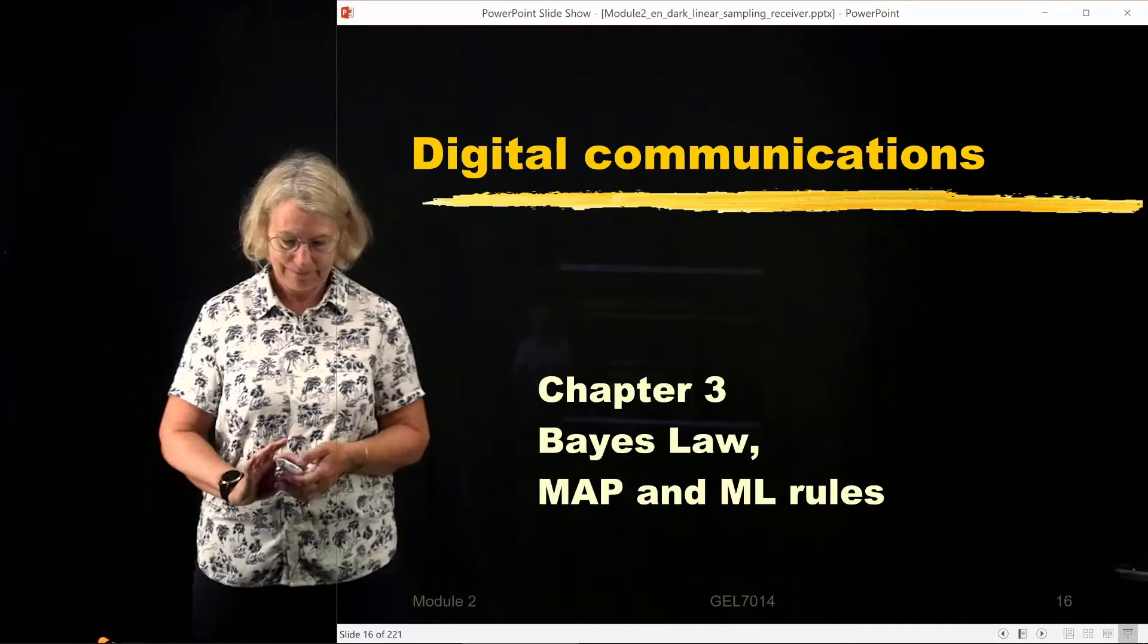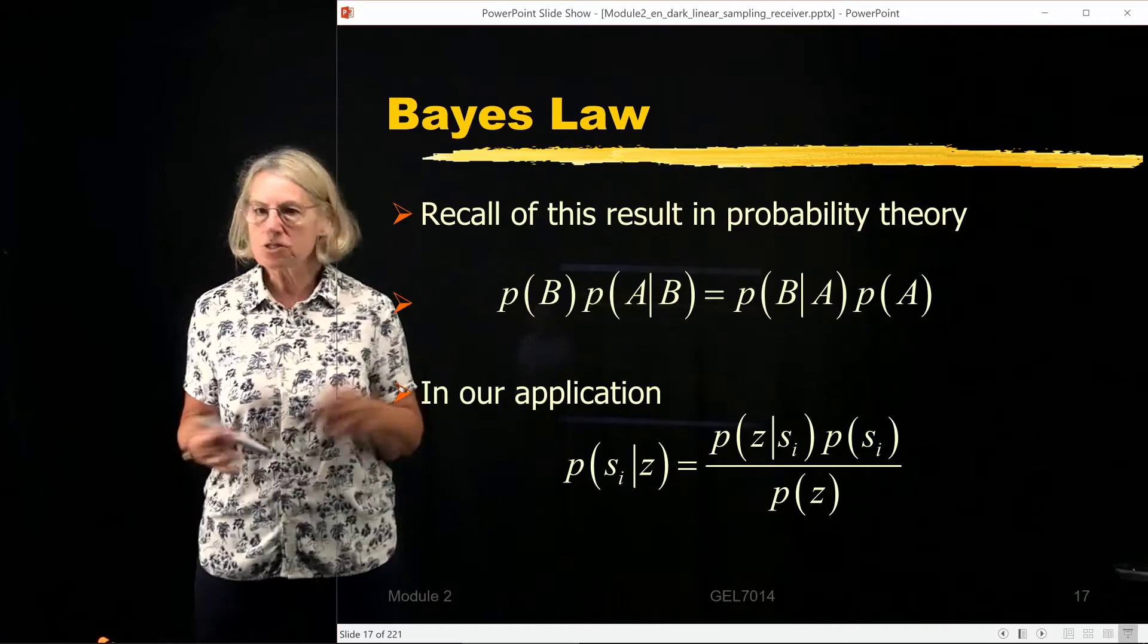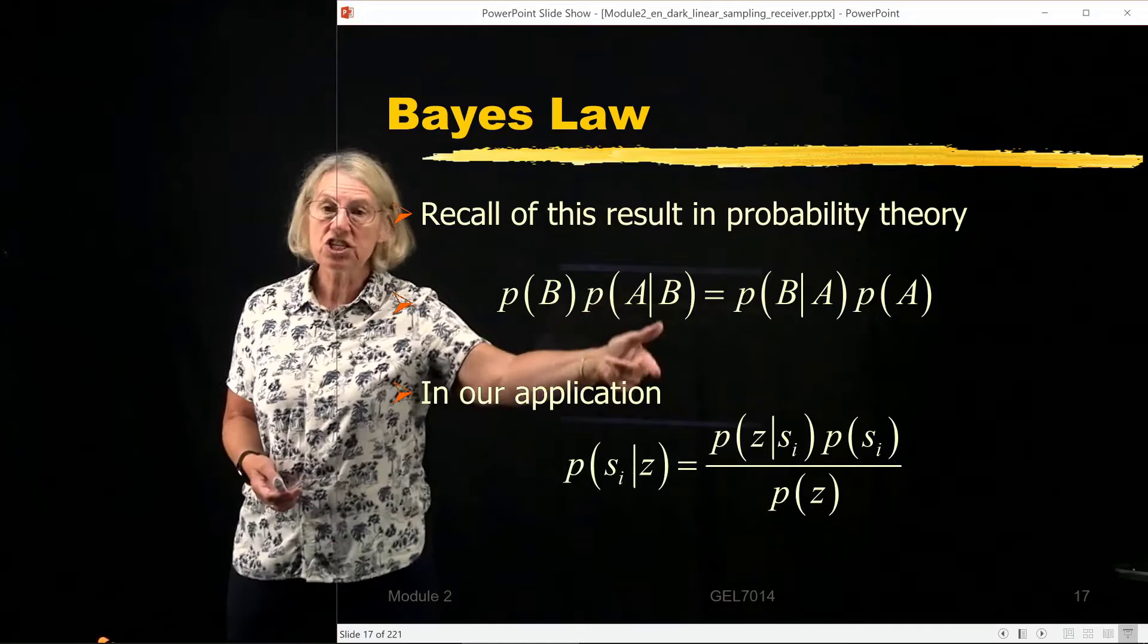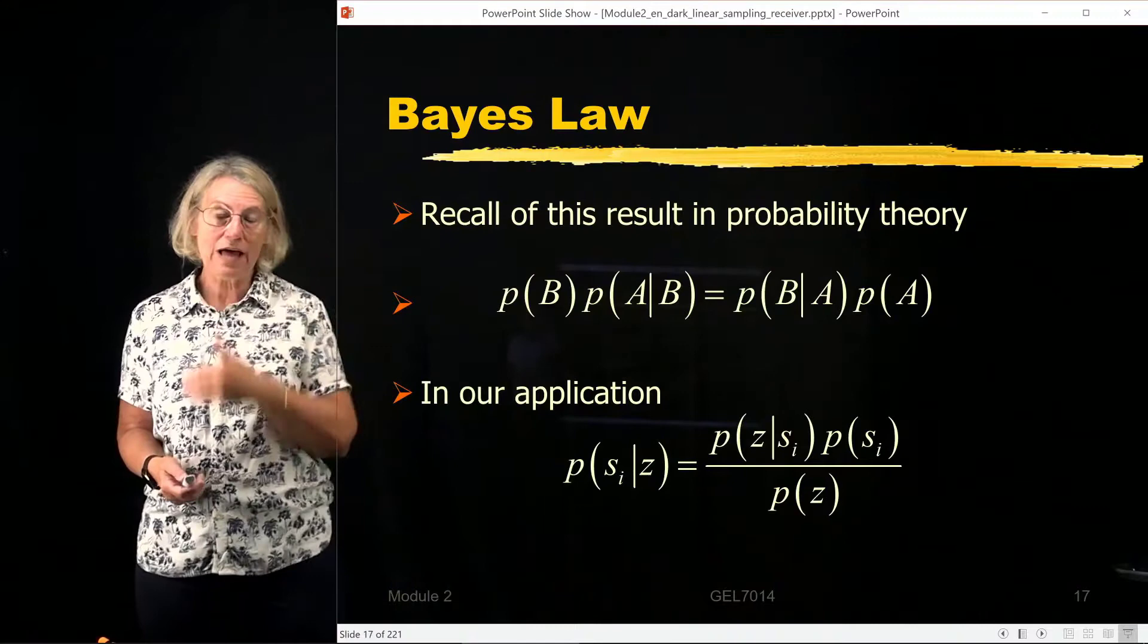So let's recall Bayes' law from our study of probability theory. If there are two events, event A and event B, Bayes' law tells us that the probability of event B times the probability of event A conditioned on event B is simply equal to the probability of event B given A times the probability of event A. So that's Bayes' law. Now we're going to apply Bayes' law to our communication system.